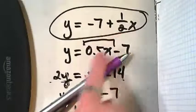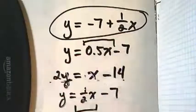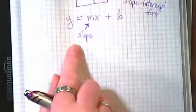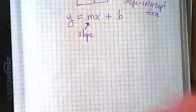That's because we changed this number. And that's what the slope is here. It's telling us how steep the line is.